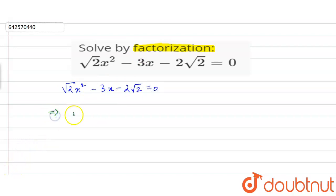We can write it as root 2 x square, and minus 3x can be written as minus 4x plus x minus 2 root 2 is equal to 0.